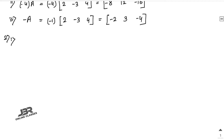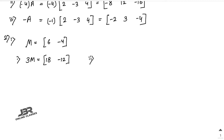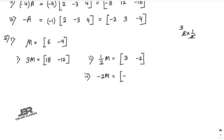Sum number 2: the given matrix M is [6, -4], also a row matrix. Number 1: find 3M — multiply 3, so it's 18 and -12. Number 2: find half M — 6 into half is 3, -4 into half is -2. Number 3: -2M — multiply -2, so -12 and +8. That is your answer.